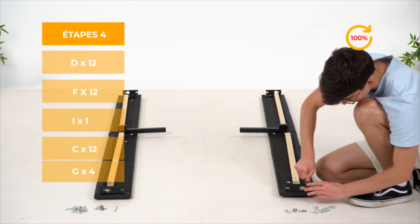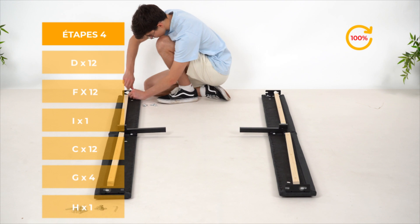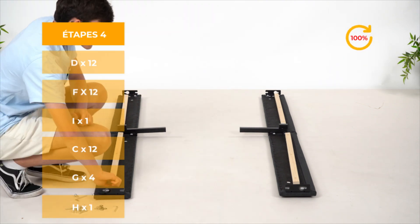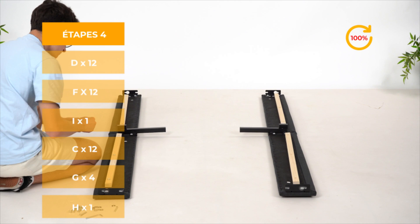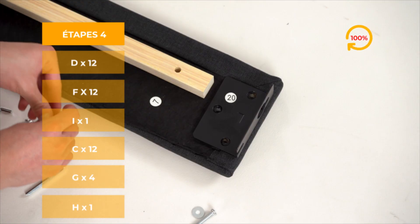Placez les pièces 8 sur les pièces 6 et 7 précédemment assemblées, puis placez les pièces 19 et 20 sur les côtés des deux ensembles de pièces. Attention, vérifiez bien l'ensemble, puis vissez à 100%.